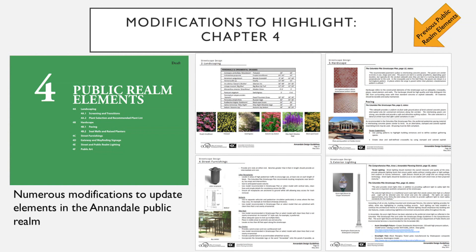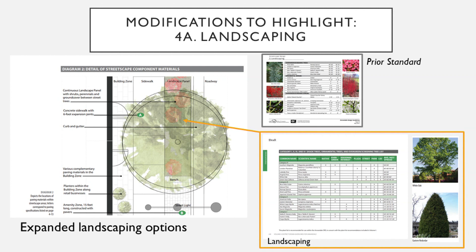Chapter 4 is dedicated to elements in the public realm, including landscaping, lighting, benches, trash cans, and hardscape materials used to treat sidewalks and paths. Section 4A is dedicated to landscaping. This section carried forward a number of recommendations from the 2011 guidance, but also supplements them with new species unique to Annandale, including the suitability of certain trees, shrubs, and grasses and ground covers for different types of spaces such as streets, parks, or plazas. It should also be noted that these recommendations are in addition to those provided in Volume 1.